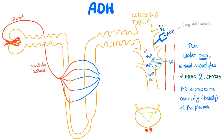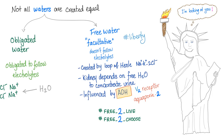ADH acts on the tubules using the V2 receptors, opening aquaporin-2 protein channels for water. Water flows from the tubule to the peritubular capillaries — this is called reabsorption, but it's pure water without electrolytes. It's the free water, the facultative water — free to choose using the V2 receptor. There are two types of water: obligated and free.